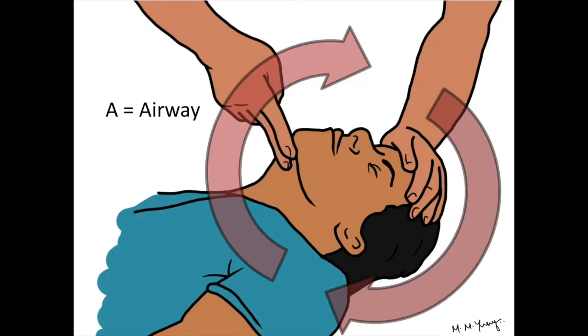A is for Airway. Make sure they are lying on their back, then tilt the head back by placing your fingers on their chin and your palm on their forehead like this.